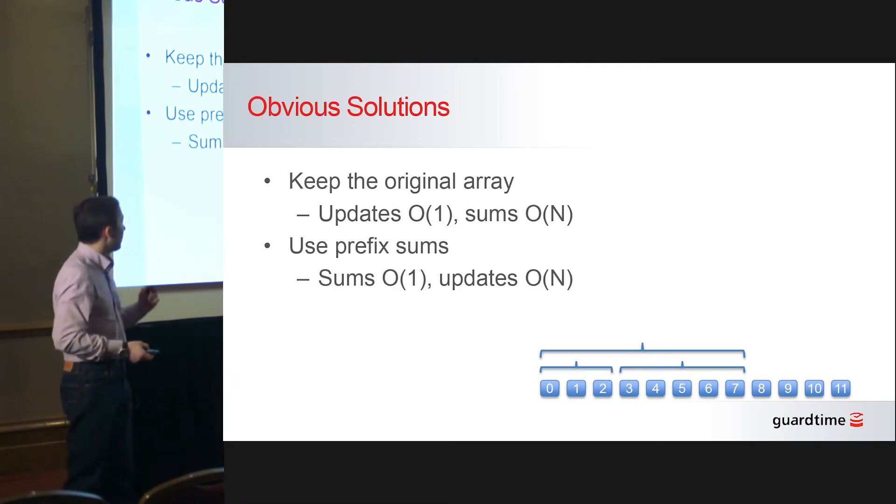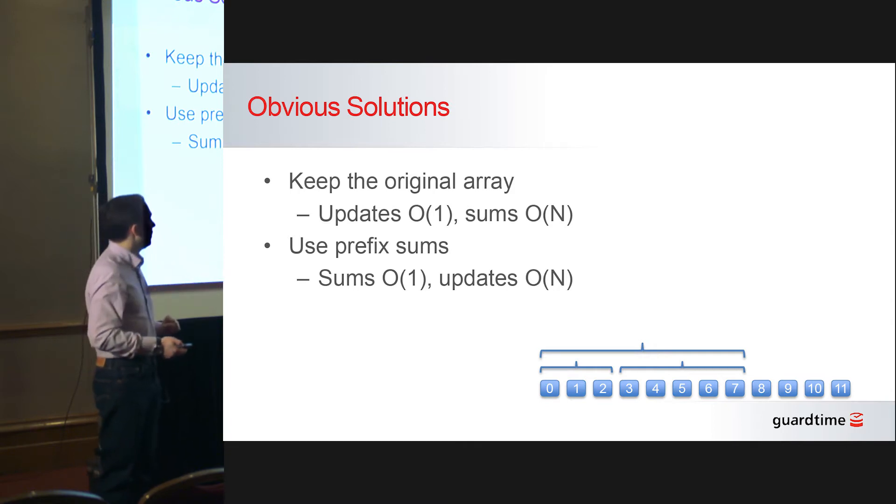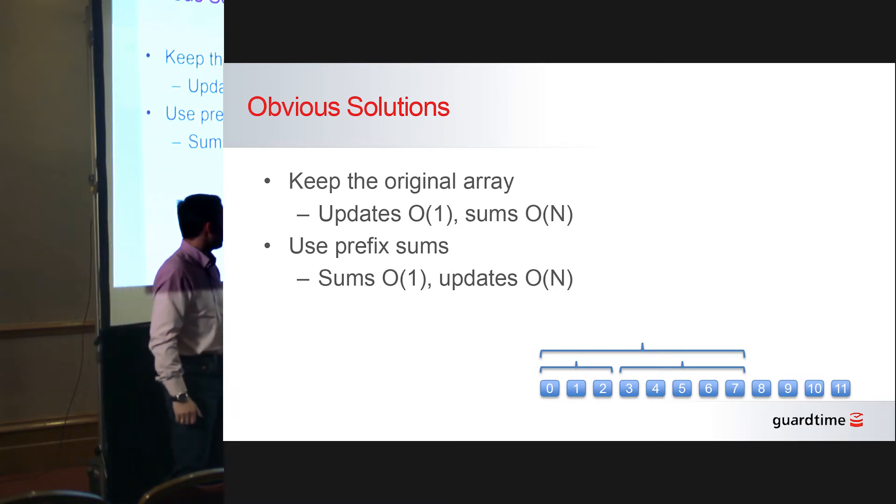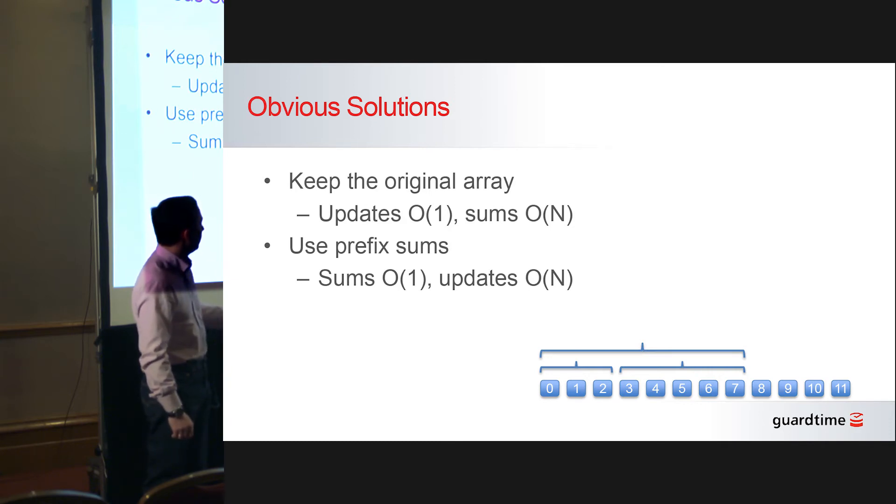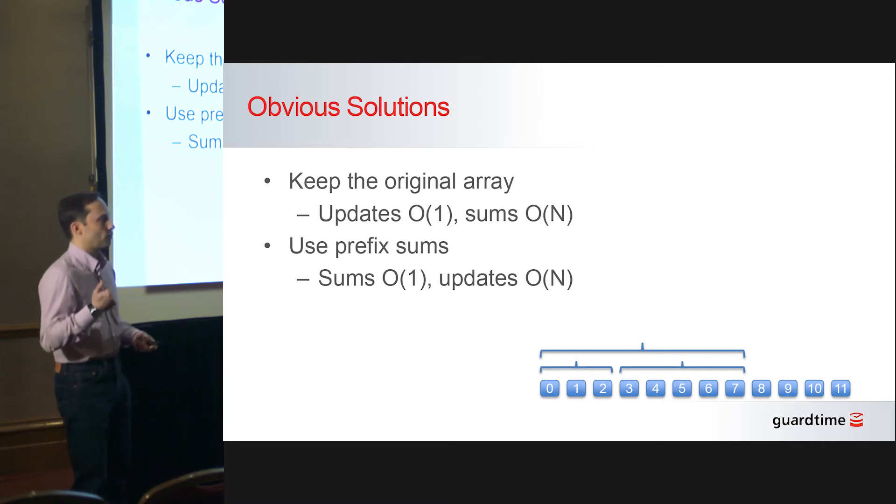Another way is to keep prefix sums, which means that in each element of your array, instead of the original element, you keep the sum of the elements of the array up to that point. And then, of course, if you need a sum of a subsequence, you can do it with one simple subtraction. You first read out from the array the sum from the beginning of the array to the end of your segment, and then you read out the sum from the beginning of the array until just before the beginning of the segment. And the difference is the sum of your segment. So you can read out the sums very quickly.